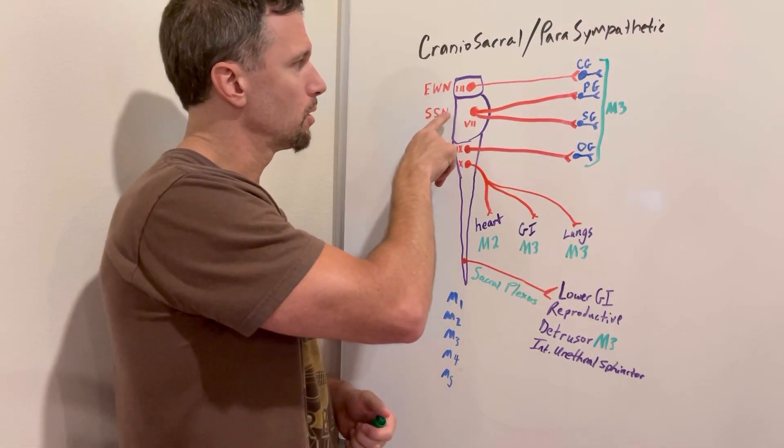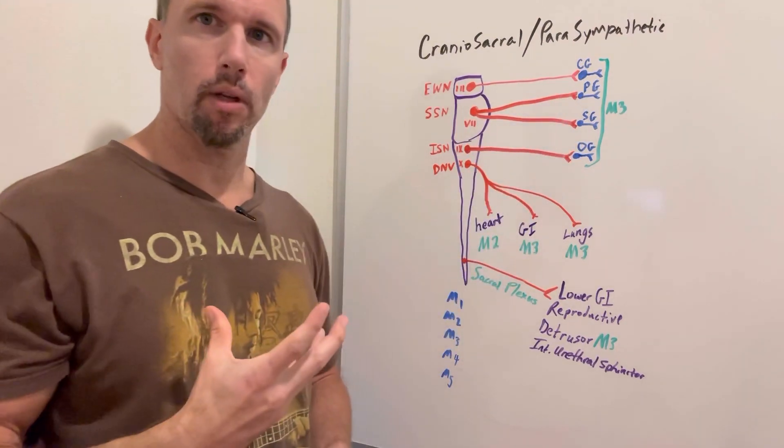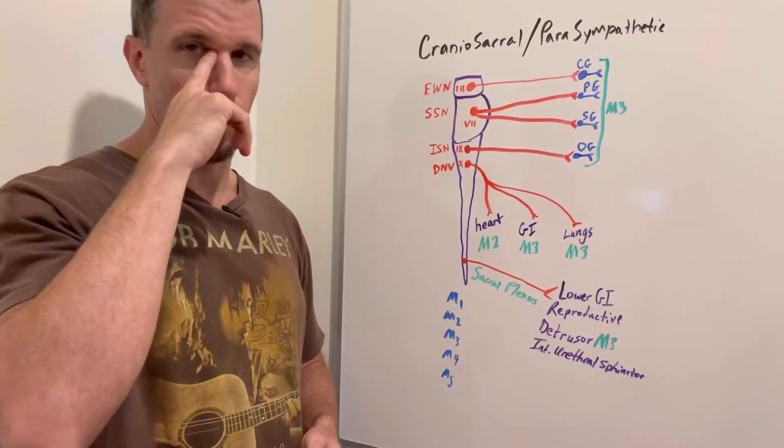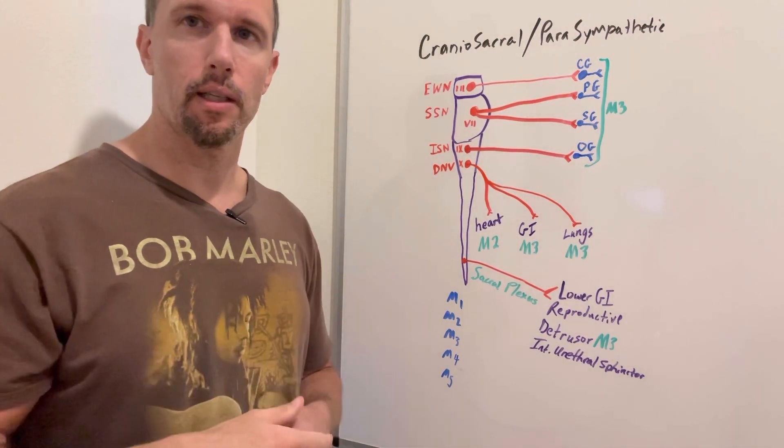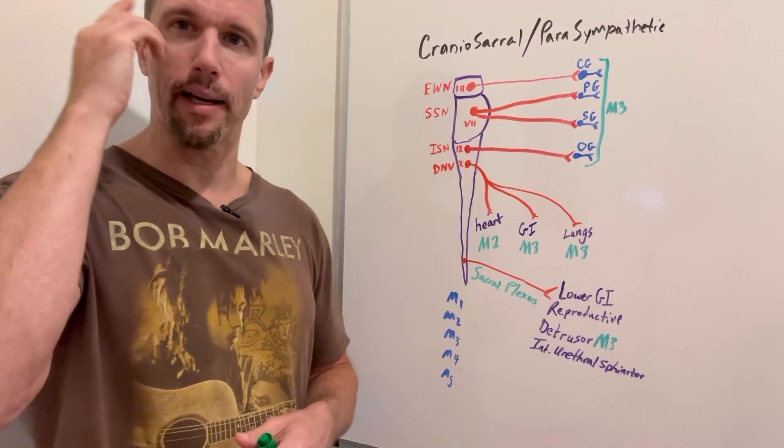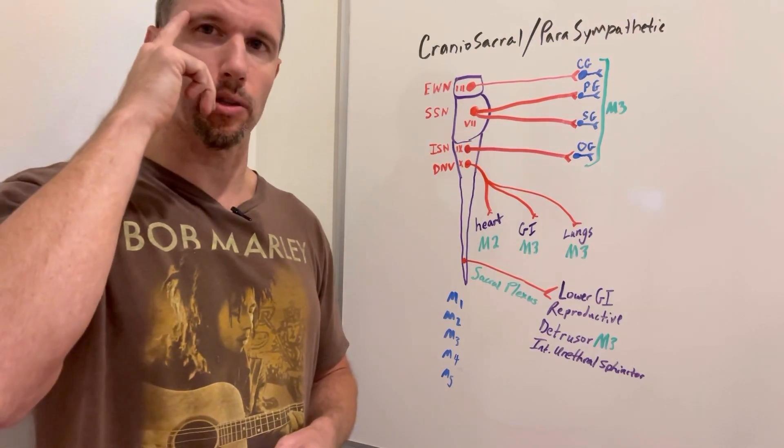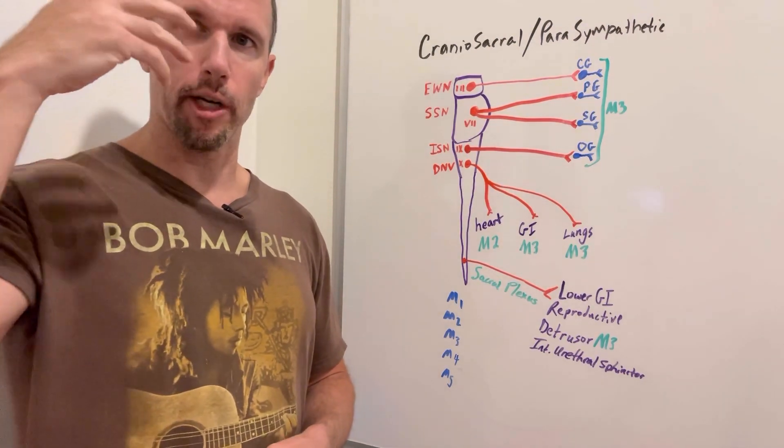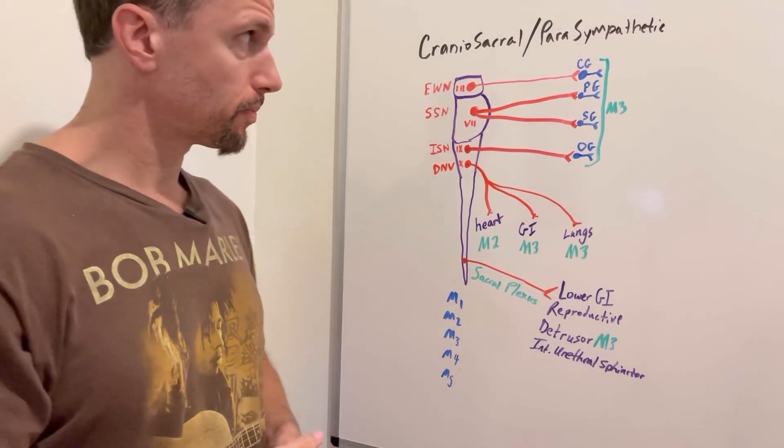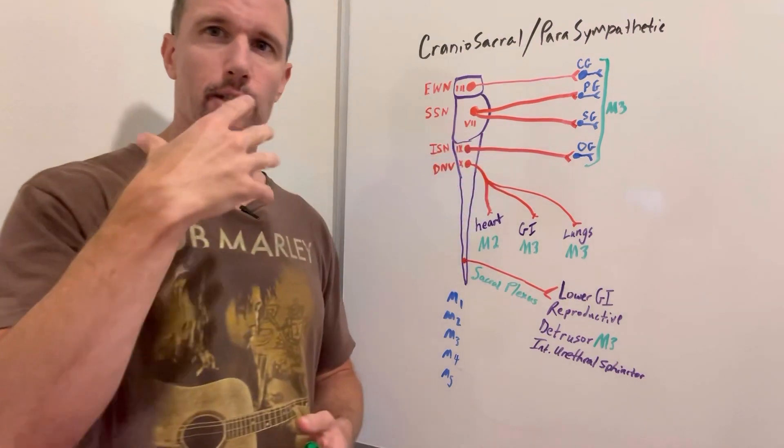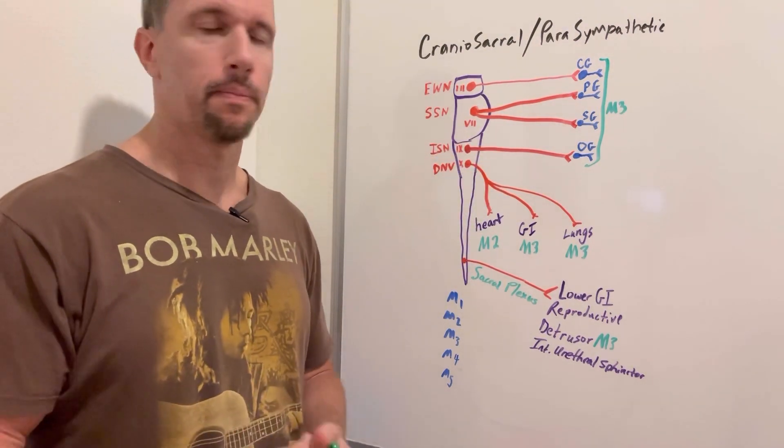The pterygopalatine ganglion goes to your lacrimal glands, the glands in the inner part of your eye that create that fluid. Actually the lacrimal glands are up here and they create that fluid that keeps your eye lubricated. It also goes to the nasal mucosa and causes secretions there.